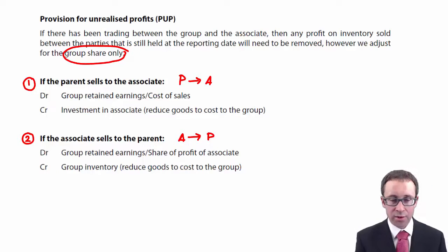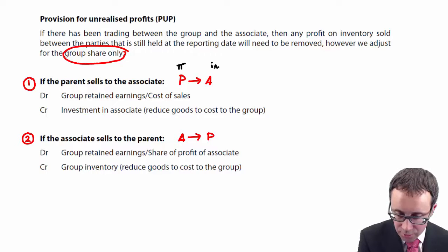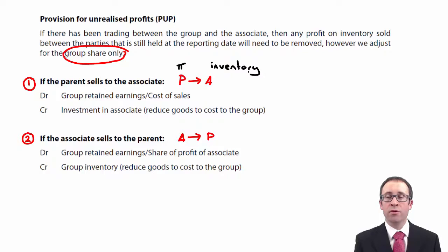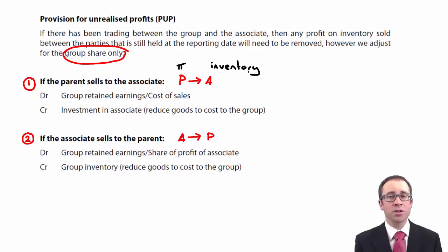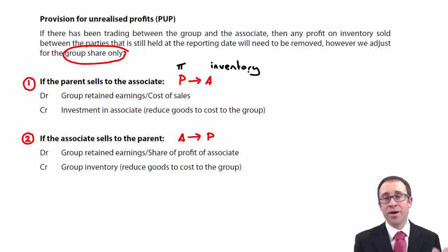If we look at the first situation, it is the parent that has made the profit. So what we need to do is remove that profit from the parent's books and credit the inventory of the associate. But there's an issue — when you look at the associate, we haven't consolidated that associate, so we cannot credit inventory like we've been used to doing. We have to credit something to do with the associate, and the only place we can credit the associate within our accounts is the investment in the associate. So if P sells to A, we will credit the investment in associate.